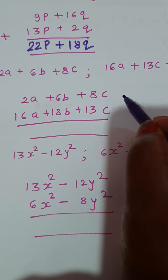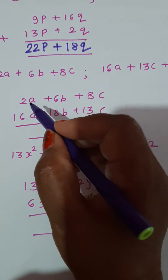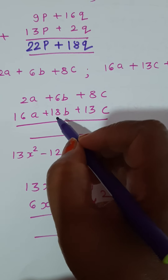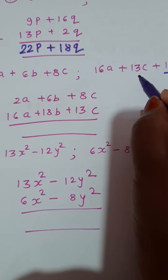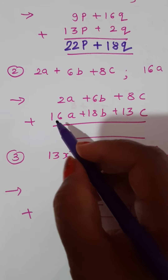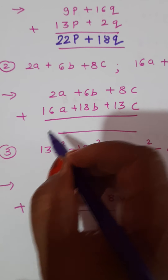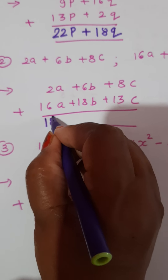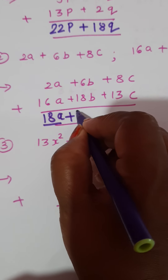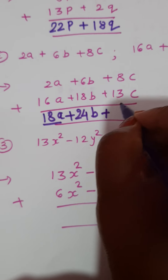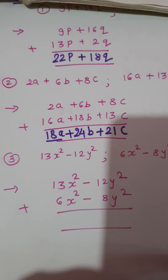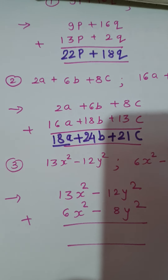While arranging the terms, you should be very careful. So: downside of 2a write 16a, downside of 6b write 18b, and downside of 8c write 13c. Now add the like terms: 16 plus 2 is 18a; 18 plus 6 is 24b; 13 plus 8 is 21c. Only add the numbers and write the variable as it is.